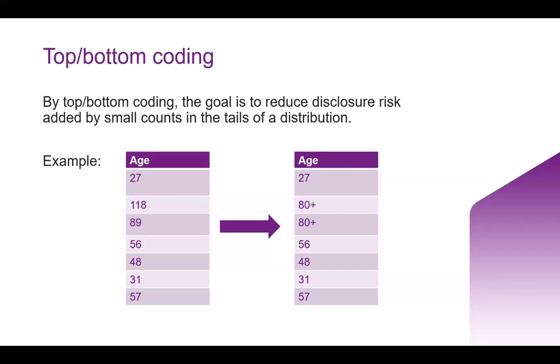For age, both 118 and 89 were coded as 80-plus, while the remaining ages — which are arguably less problematic as there are more people globally — were left as they were. It does depend on the dataset. You can apply top and bottom coding to hide the extremes, and do the same thing with income, knowing that a lot of people occupy that middle space — allowing you to keep the nuance within that middle space.